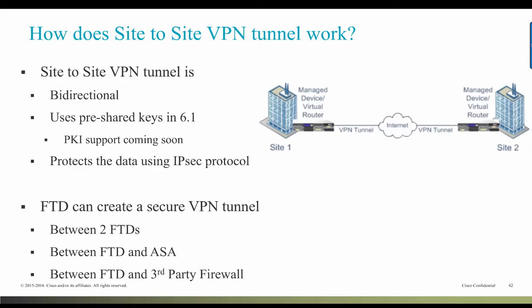A VPN is nothing but a network connection that establishes a secure tunnel between remote peers using a public source, such as the internet or some other network. VPNs use tunnels to encapsulate data packets within normal IP packets for forwarding over IP-based networks. They use encryption to ensure privacy and authentication to ensure the integrity of the data.